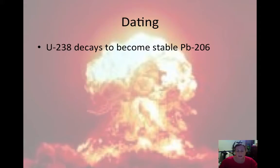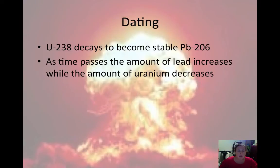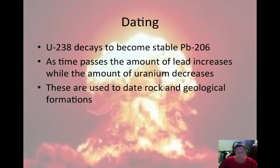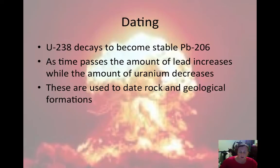Uranium-238 decays to become stable lead-206. As time passes, the amount of lead increases and uranium decreases. These are used to date rock and geological formations. The half-life of uranium-238 is about 4.51 billion years, which is about the age of the Earth. If we find material that is half decayed, it would have about half uranium-238 and half lead-206, meaning one half-life has gone by and it would be about the same age as the Earth.